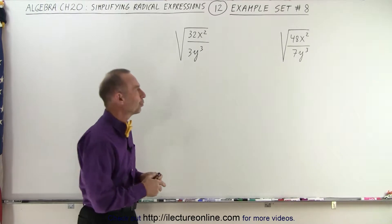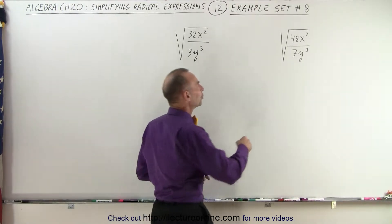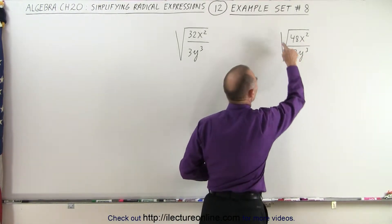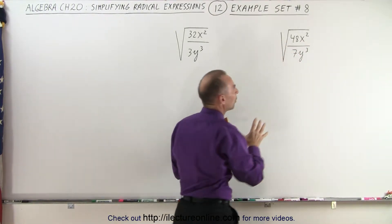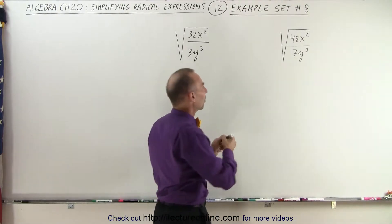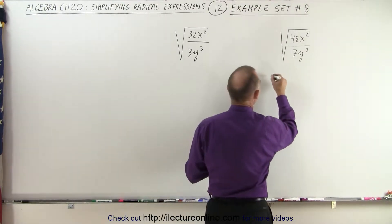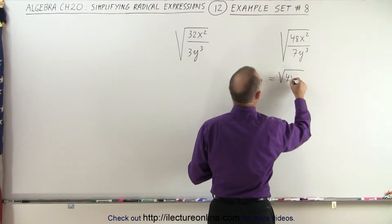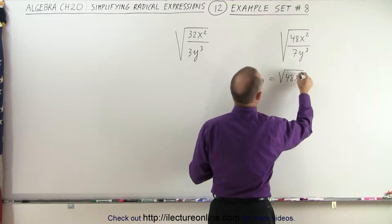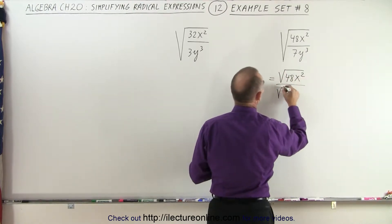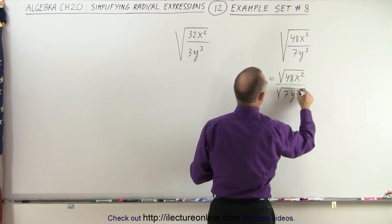We follow a set of rules. Whenever we have both the numerator and the denominator underneath the radical, we like to separate that. So we start out by writing it as follows: the square root of 48x squared divided by the square root of 7y cubed.